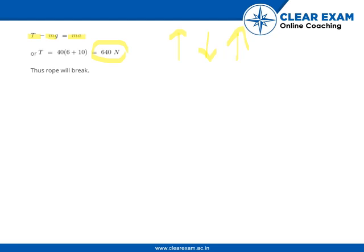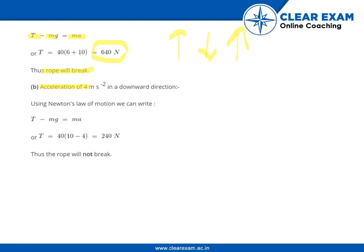640 Newton is much more than the maximum tension the rope can withhold, therefore the rope will break. In the second scenario, the acceleration is 4 meter per second in the downward direction. By using Newton's law of motion, we can write that T minus mg equals minus ma, because tension is in the upward direction, the weight of the monkey is in the downward direction, and the motion is also in the downward direction. After putting in the values, we get the tension as 240 Newton's, which is less than the permissible or maximum tension, therefore the rope will not break.